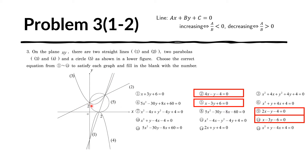Let's try (0, 2) and (2, 0) for each. For this one, if we try (0, 2) — plug in zero for X and two for Y — zero times four is zero and Y equals two, so negative two minus four is negative six, which is not equal to zero. So this is not one of the lines. Let's try (2, 0): four times two is eight, Y is zero, so eight minus four is four — not zero. So choice 2 is not an answer.